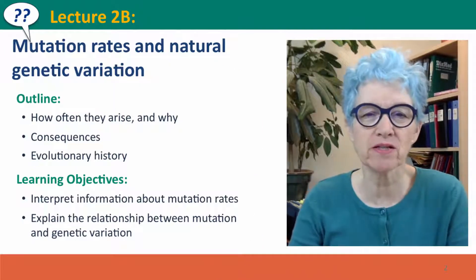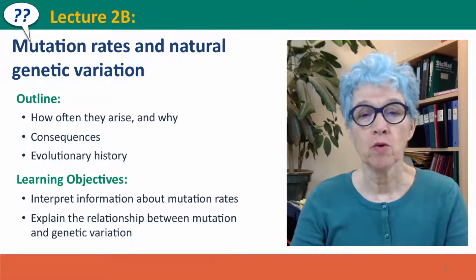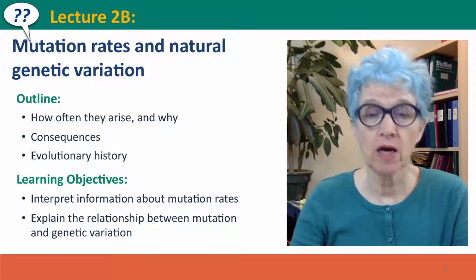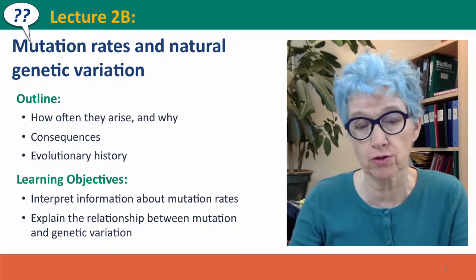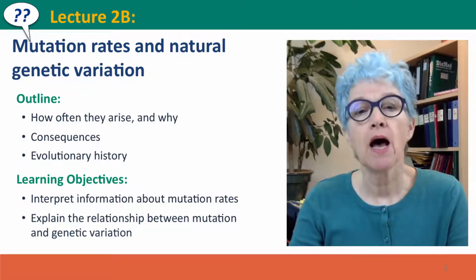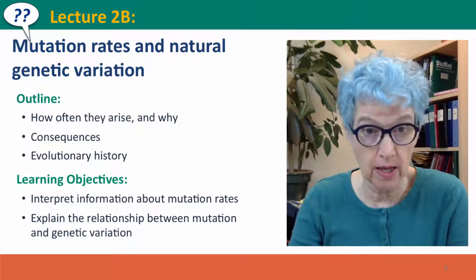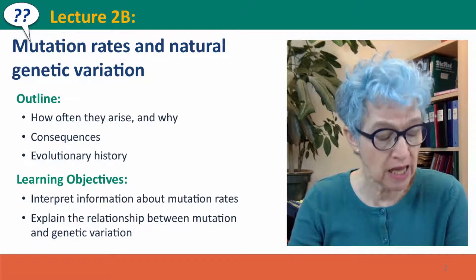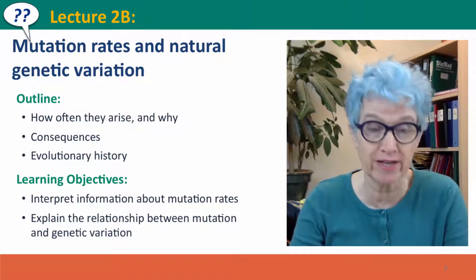Hi everyone, welcome back to Useful Genetics. This is lecture 2b and we're going to build on our discussion of DNA replication errors in lecture 2a to talk about mutation rates, how often mutations arise and why, and about the consequences of mutations and introduce ideas about their evolutionary history.